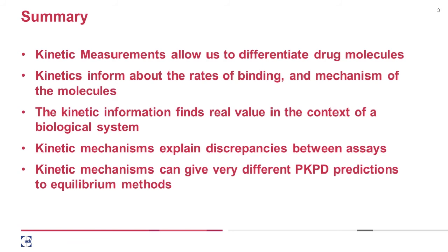Another question for Martin: do your PKPD predictions use the individual kinetic rate constants — on and off rates — or just the more accurately determined KI values? Great question. We always try to use kinetic rate constants over the equilibrium KI value. The equilibrium KI value is what you get if you leave something for long enough. One of the problems in vivo is that the concentration isn't constant — we're thinking about an approach to equilibrium, and not only is the level of binding changing over time, but also the concentration that drives it is changing over time. So the only way you can really predict the accurate effects is to use the kinetic rate constants.